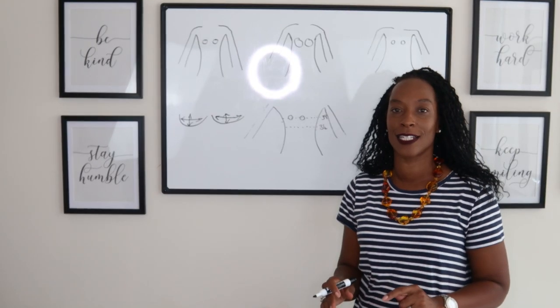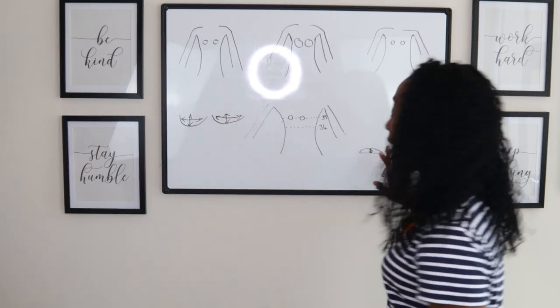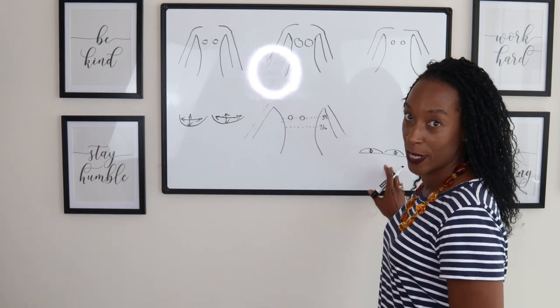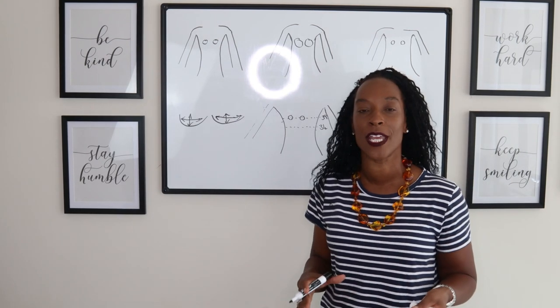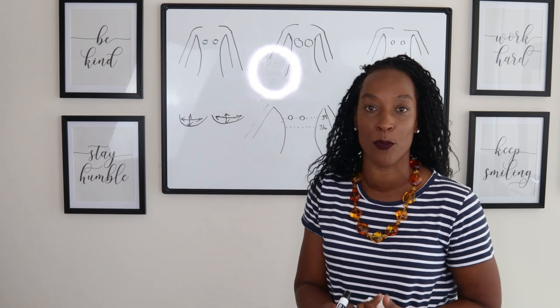Now we understand that the wires measure the diameter of the breast and the cup size measures the projection from the rib cage. How do we put this information into practice when we're buying or trying a bra on?